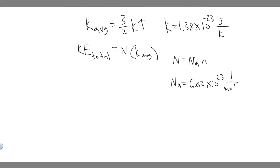Let's start with part A — finding the average translational kinetic energy, K average. We're using the formula 3/2 times K times T, for an oxygen molecule at STP. STP stands for standard temperature and pressure, so the standard temperature we need is 273 K. You can use 273.15, but I'm just going to use the rounded value.